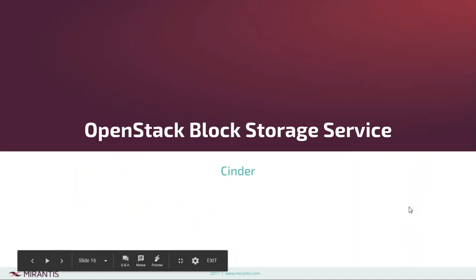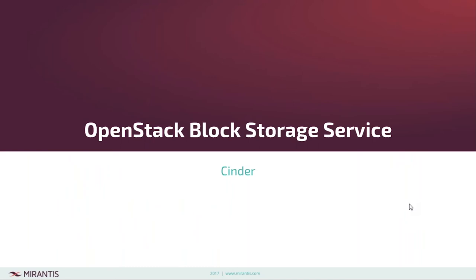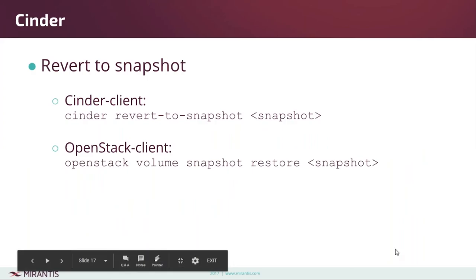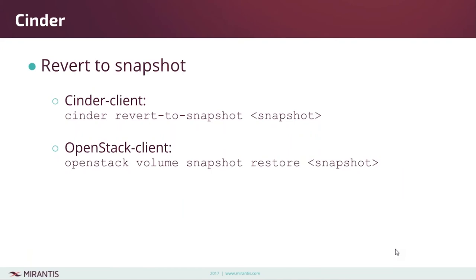Now let's talk about what's new in block storage with Cinder. For some time you've had the ability to create snapshots of a volume, but what good is that if you can't actually revert to that snapshot? Now you can — both in the Cinder client and in the OpenStack client. You just need to know the ID for the snapshot you are reverting to.